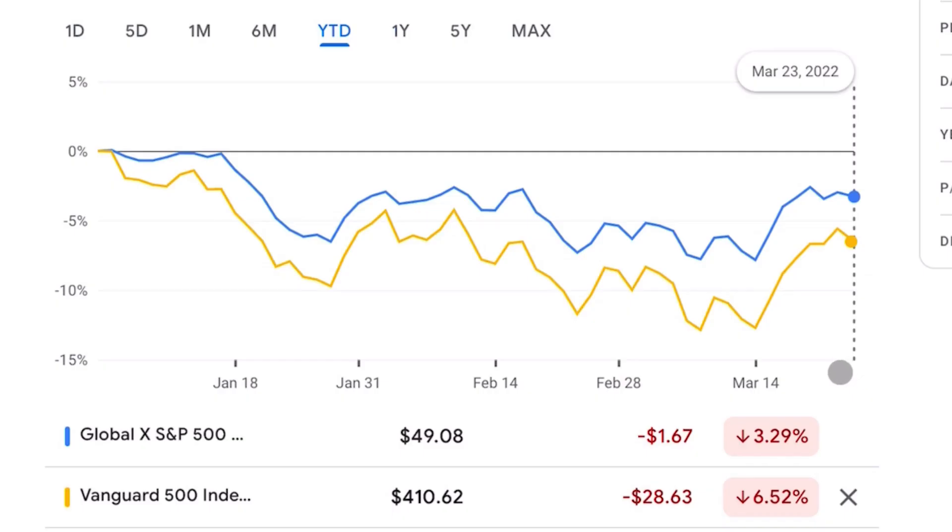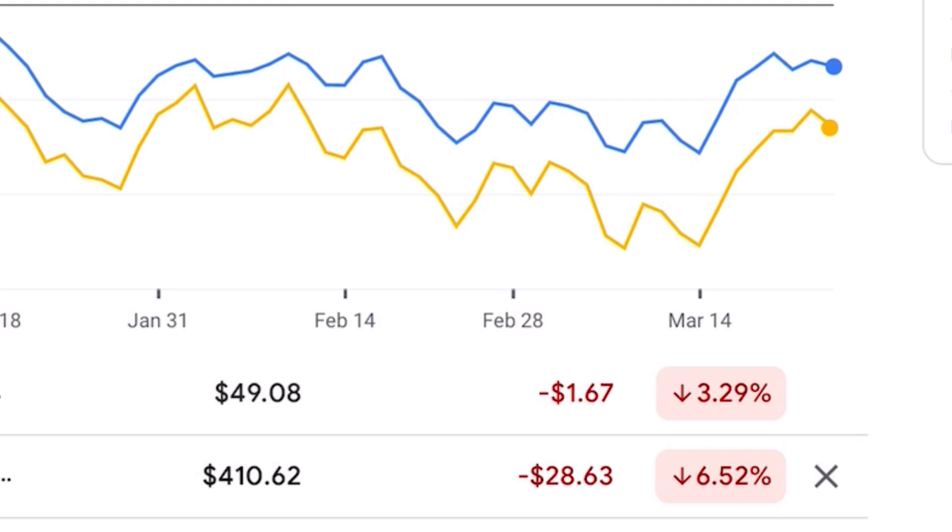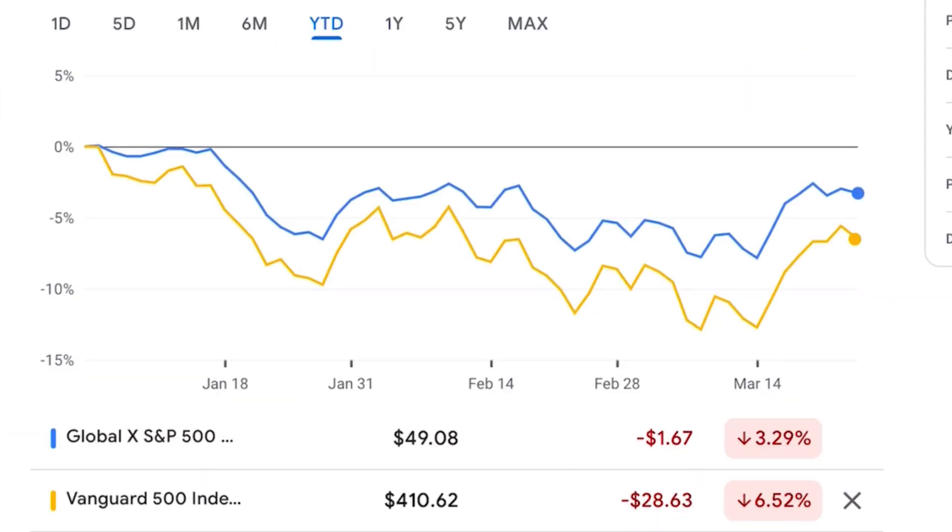This is year-to-date which encompasses all the recent volatility we just had, XYLD in blue and the S&P 500 in yellow. Overall, XYLD is down about 3% and the S&P 500 down around 6%. So right off the bat, this fund has been less volatile and held onto its value better than the S&P 500 year-to-date.